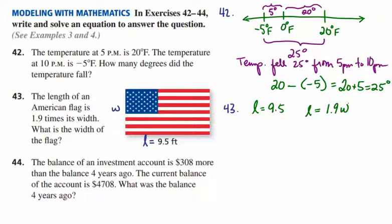And we know that the length is 1.9 times the width. So we can plug into the second equation the value of the length, and we would get 9.5 is equal to 1.9 times the width. Using the properties of equality that we learned in this section, we would divide both sides by 1.9, and we end up with w is equal to 5.